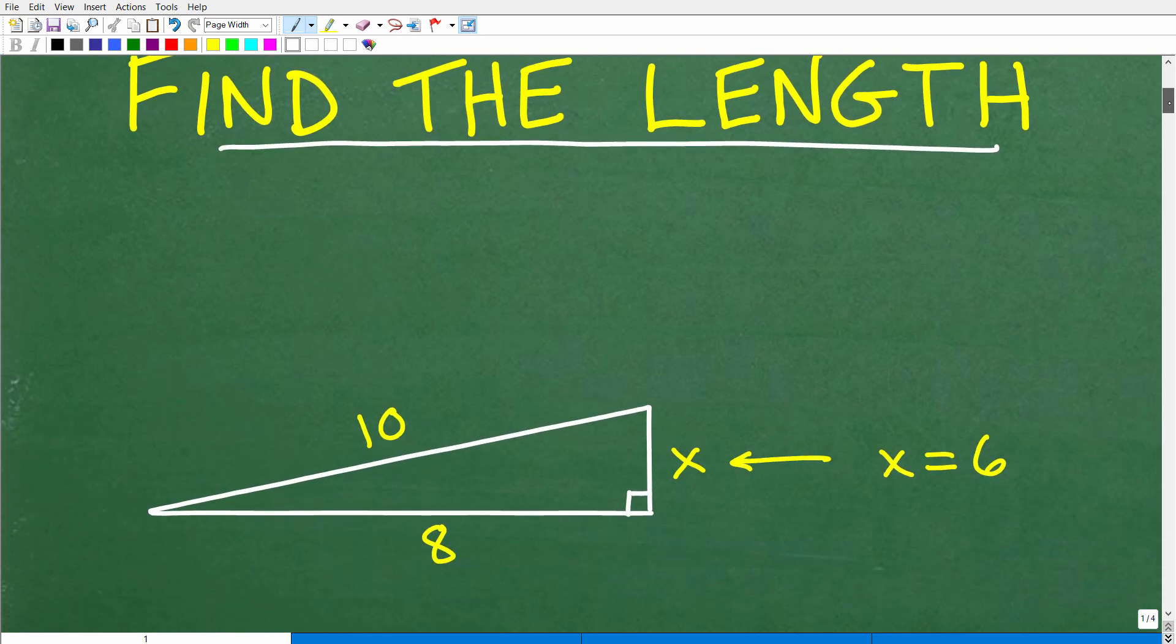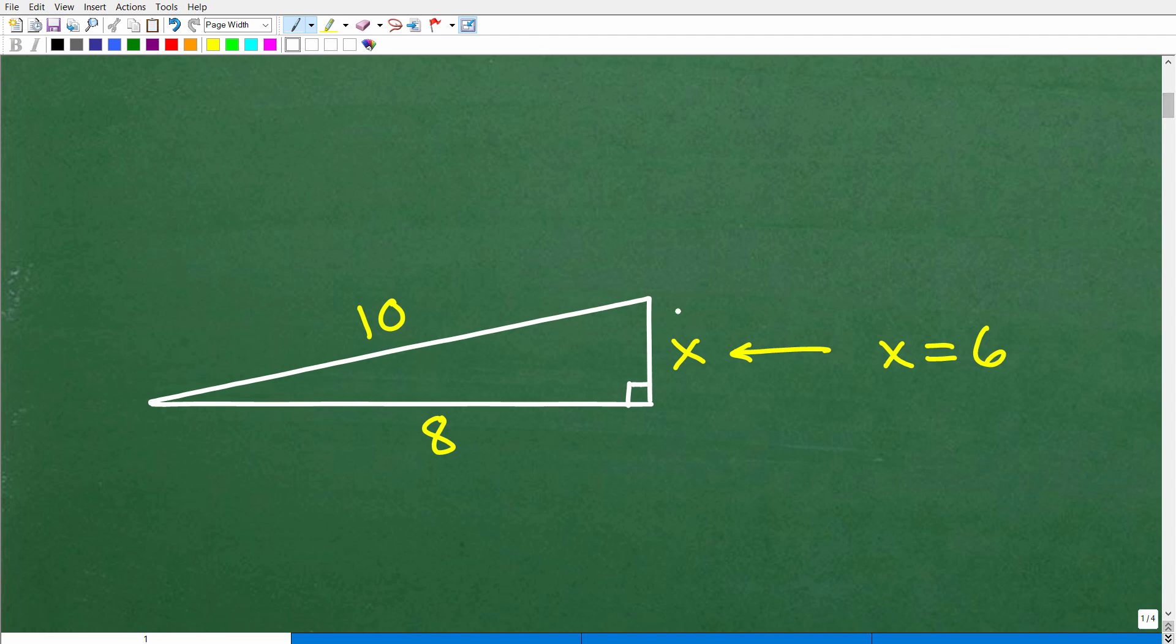What is the answer? Well, the missing side, this side right here, is 6, okay? So that is the answer. And what was the formula that I was talking about? Well, it's the Pythagorean Theorem. The Pythagorean Theorem. We're going to talk about that here in a second. But basically,